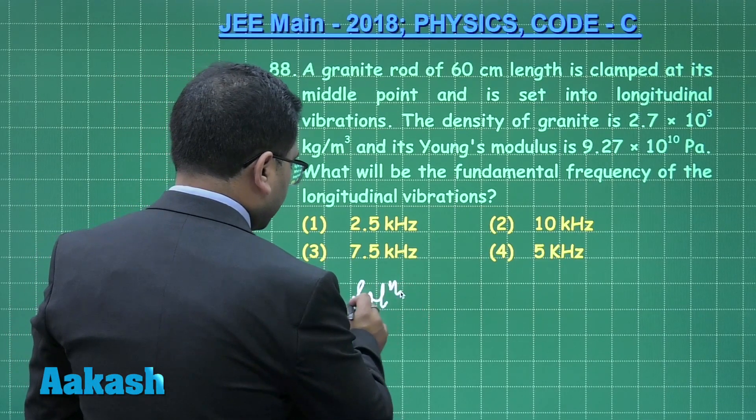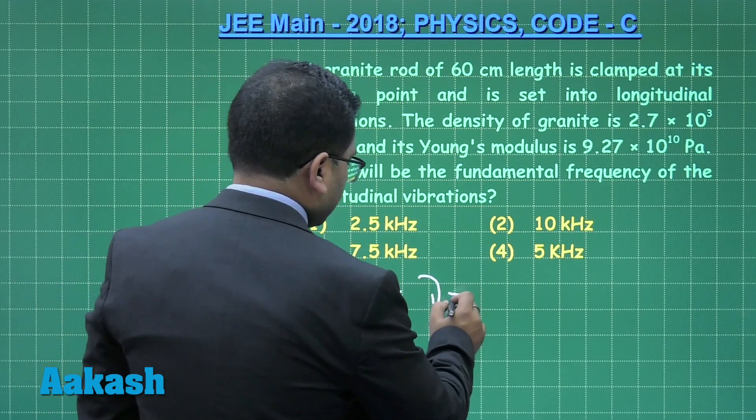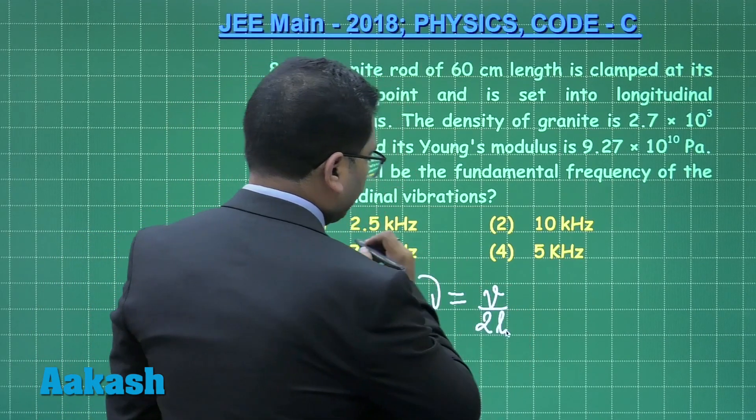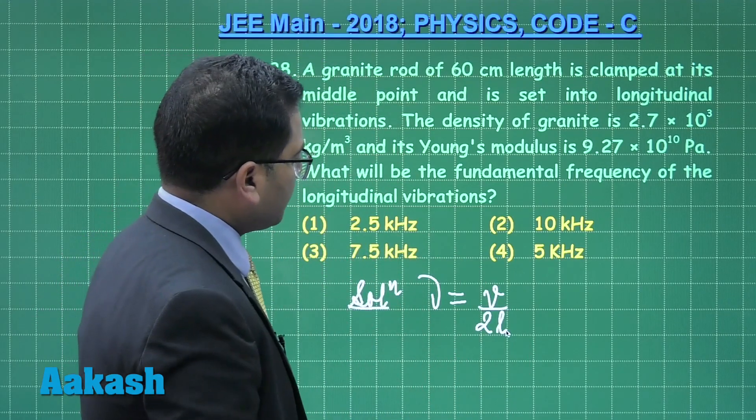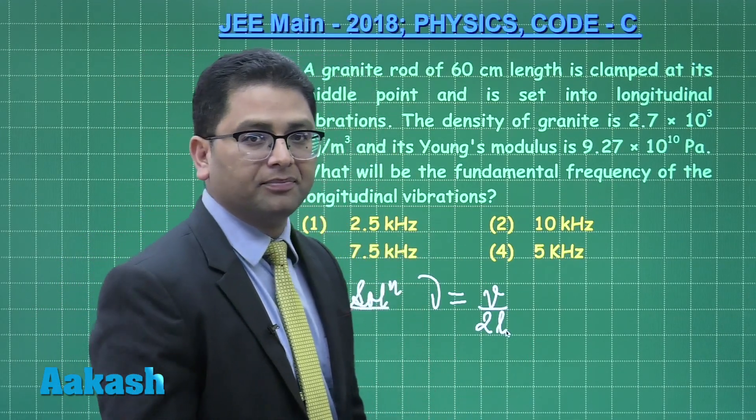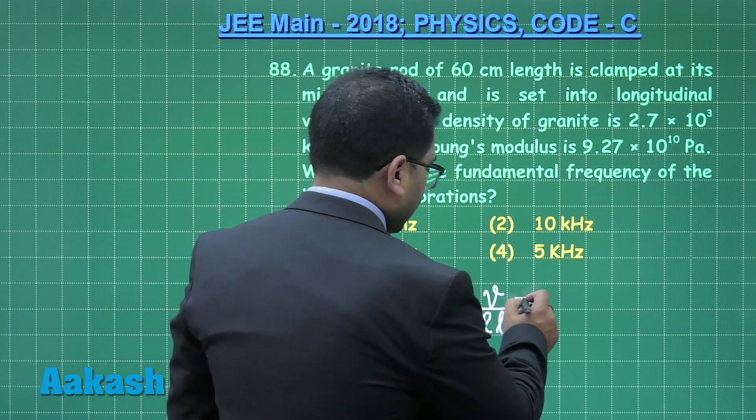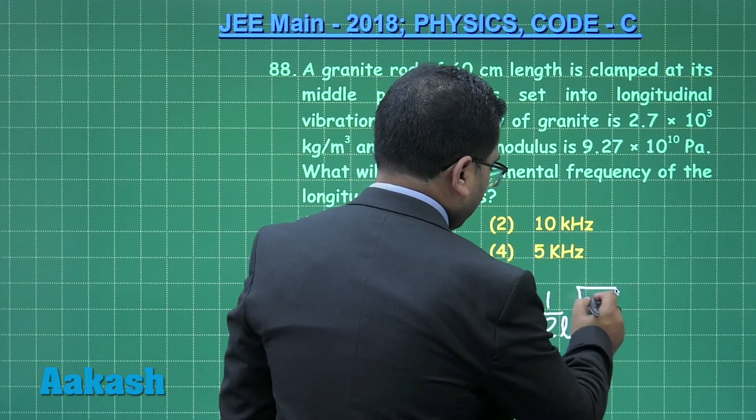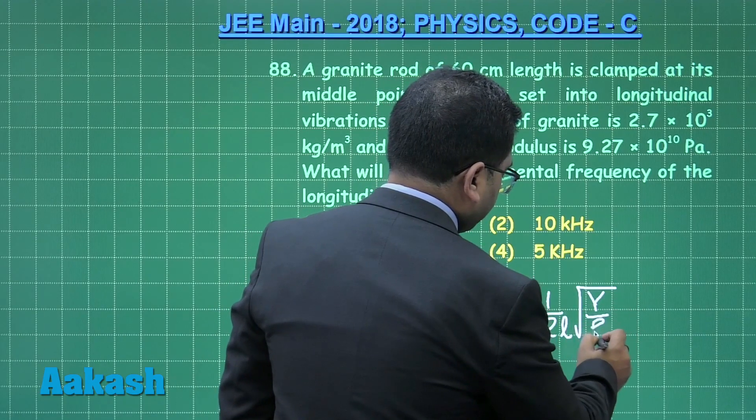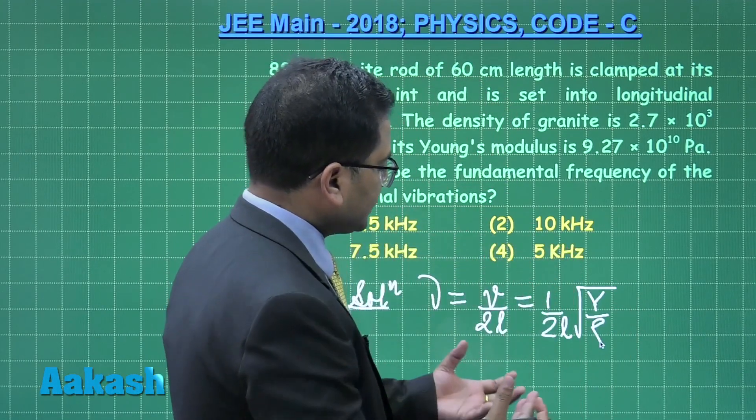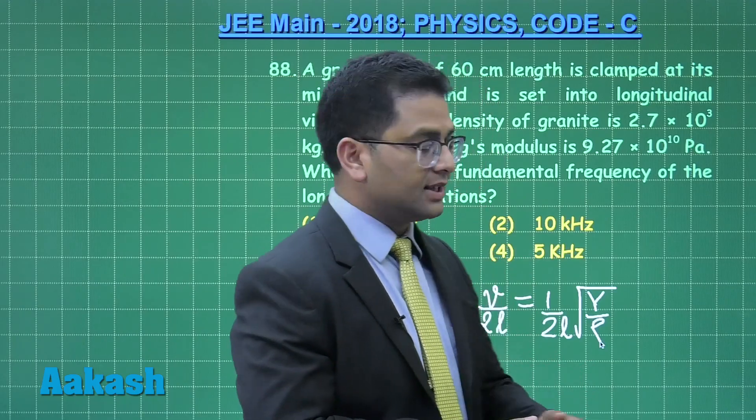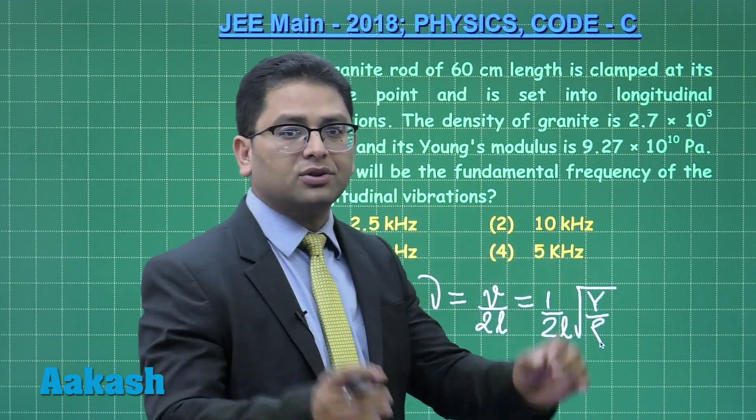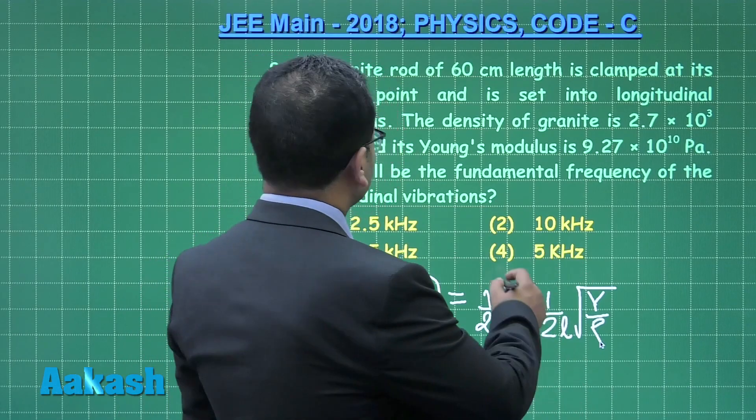The fundamental frequency of the longitudinal vibration is straightforward: f = v/2L, where v is the speed of sound in that medium. For longitudinal waves, the speed is √(Y/ρ), where ρ is the density, Y is the Young's modulus, L is the length. Everything is there, you just require a slight amount of calculation. You would get 5 kilohertz.